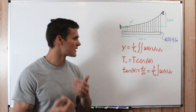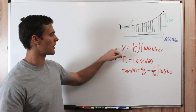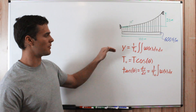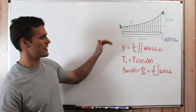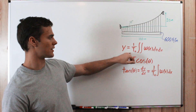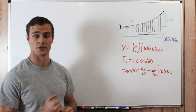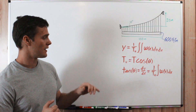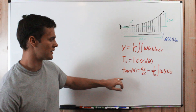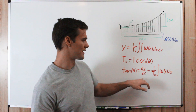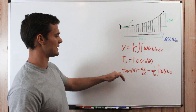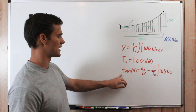The process we will use involves two equations: the double integral of the loading function multiplied by the inverse of the horizontal tension, and the slope function which gives us dy/dx, equal to the tangent of theta.